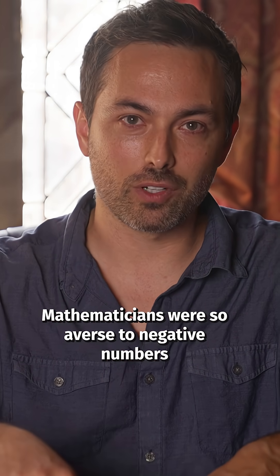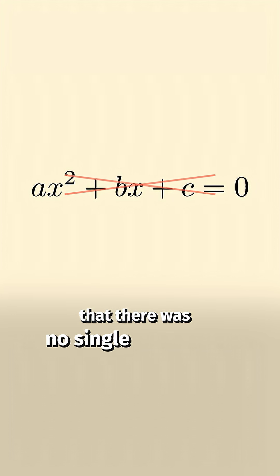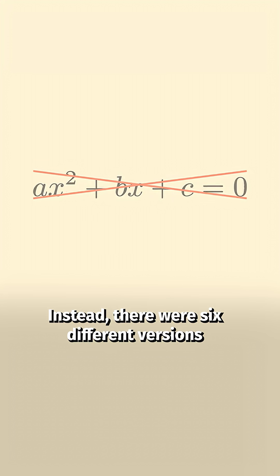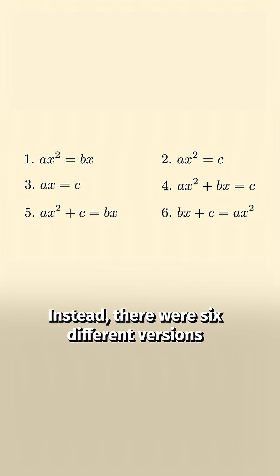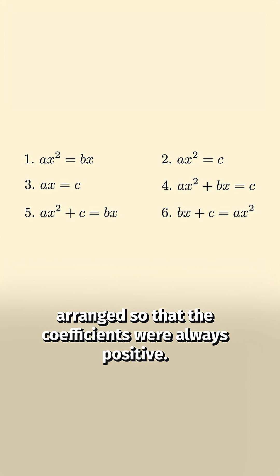Mathematicians were so averse to negative numbers that there was no single quadratic equation. Instead there were six different versions arranged so that the coefficients were always positive.